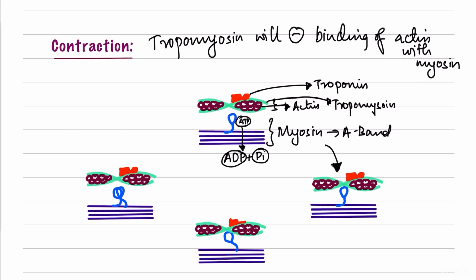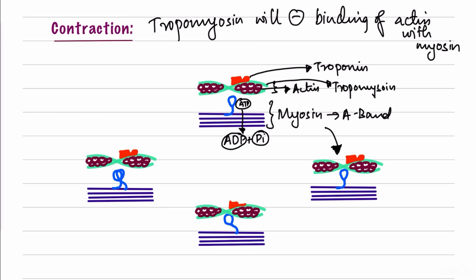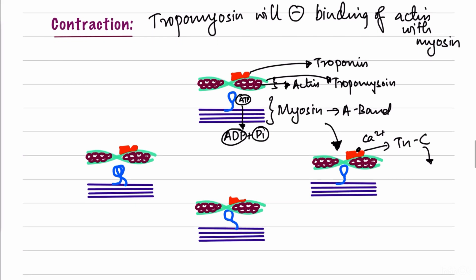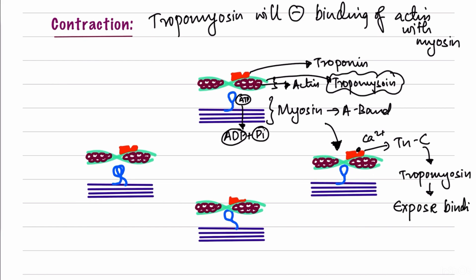When the action potential reaches the myofibrils, calcium is released and binds to troponin C, a subunit of troponin. This binding causes a conformational change in tropomyosin, which changes its shape and exposes the binding site for myosin on actin. With the binding site now open, the myosin head — which has ADP and inorganic phosphate attached and is in a perpendicular position — can bind to actin to initiate contraction.